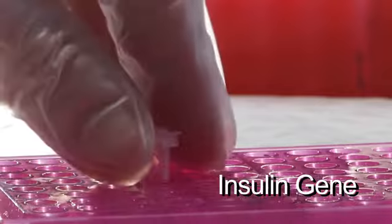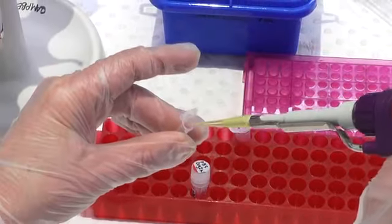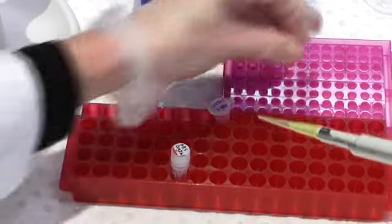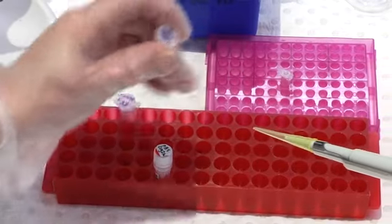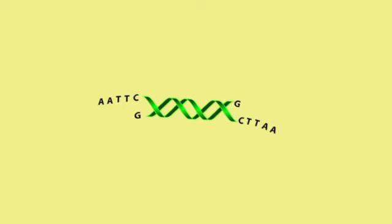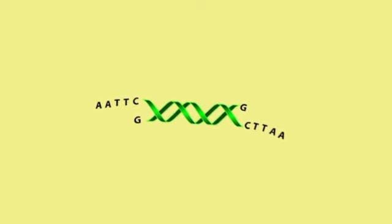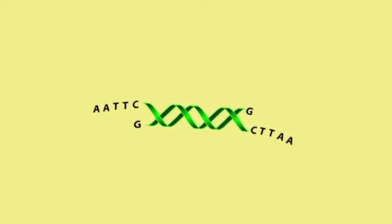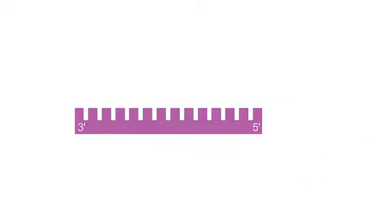I then take a sample of the insulin gene that we generated earlier, and add it to the second tube. The restriction sites at either end of the insulin gene were added as part of the PCR process. When we designed the primers to amplify the gene, we simply added the restriction site to the five prime end of each primer.